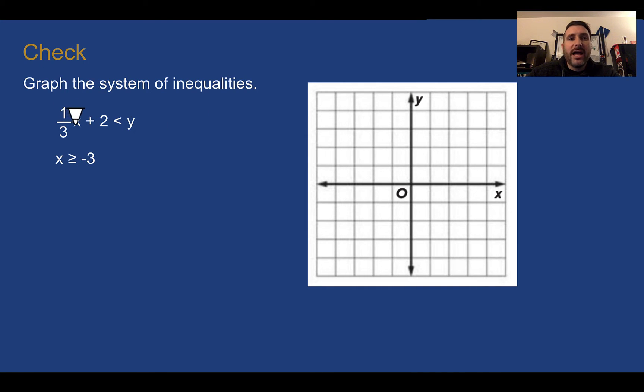Let's check. First, we have 1 third X plus 2 is less than Y. So this is sort of written pretty much in slope intercept form. So my Y intercept is 2 and my slope 1 third. So I'm going to go up 1 over 3 each time. I can see that my line should be dashed based on my inequality symbol. And let's decide where we're going to shade. If I plug in 0, that's gone. And this is 0. Is 2 less than 0? So 0, 0 right there. 2 is not less than 0. That's false. So it can't be that. So shading must be up here.